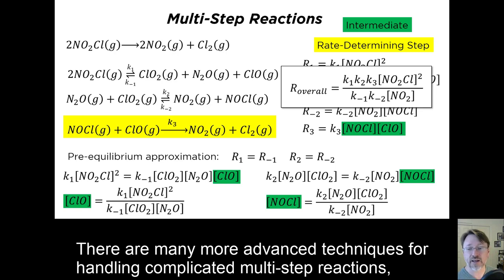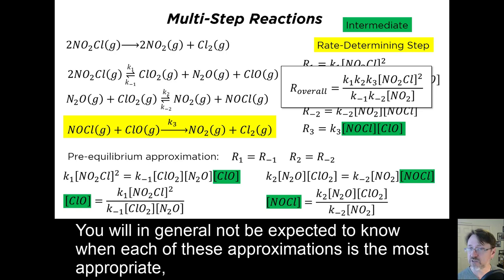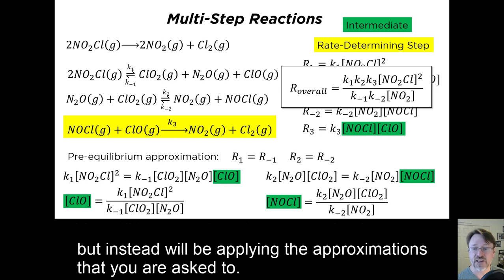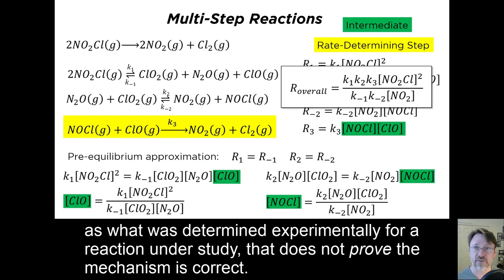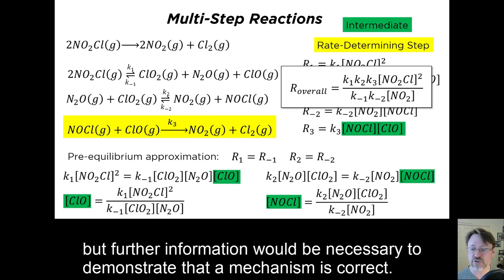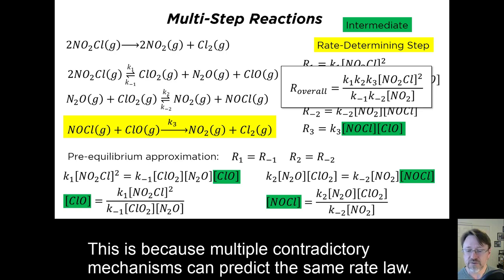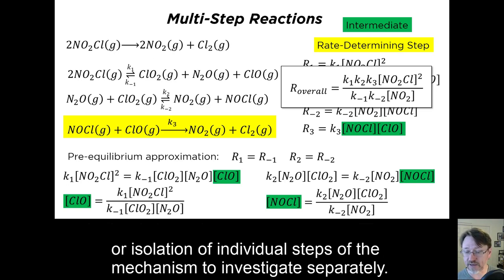There are many more advanced techniques for handling complicated multi-step reactions, but for the purposes of this class, we will only be emphasizing the idea of a rate-determining step, the steady-state approximation, and the pre-equilibrium approximation. You will in general not be expected to know when each of these approximations is the most appropriate, but instead will be applying the approximations that you are asked to. It is important to recognize, however, that even if you can show that a particular mechanism produces the same rate law as what was determined experimentally for a reaction under study, that does not prove the mechanism is correct. A proposed mechanism can be eliminated from consideration by finding that its rate law does not match experiment, but further information would be necessary to demonstrate that a mechanism is correct. This is because multiple contradictory mechanisms can produce the same rate law. Further information to support a specific mechanism may involve measurement of the reaction intermediates, for example, or isolation of individual steps of the mechanism to investigate separately.